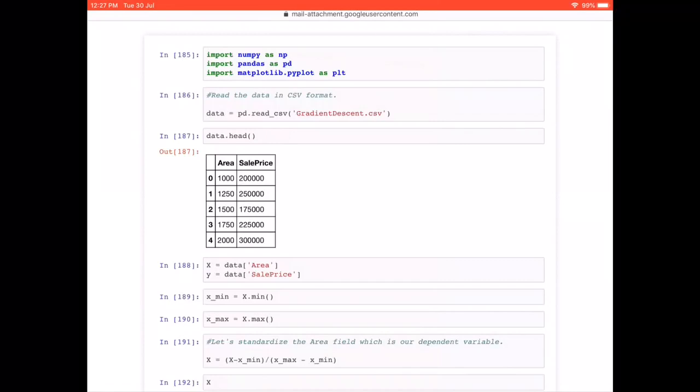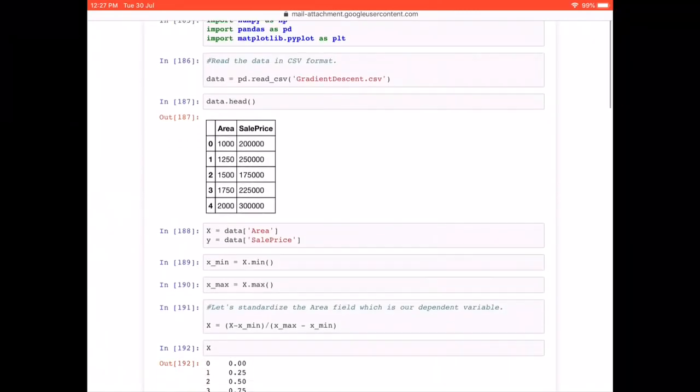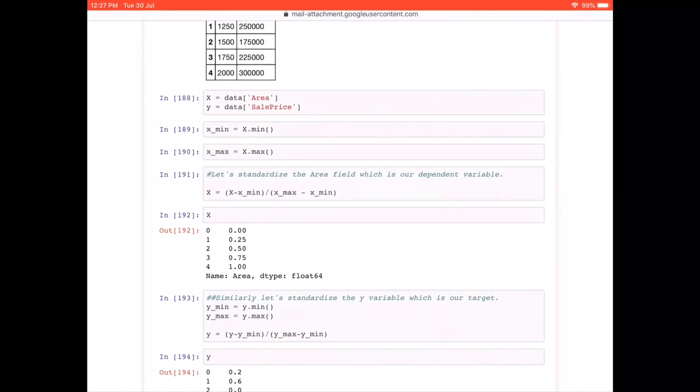Next, what we are doing is we are separating the variable and the target. So for the variable, we are assigning it to X, the capital X and the target into small y. Once we do that, what we are going to do next is standardize both X and Y.